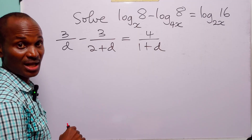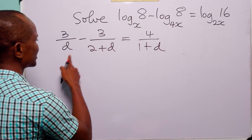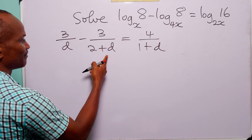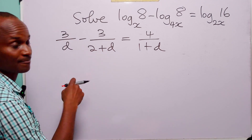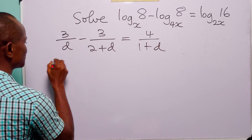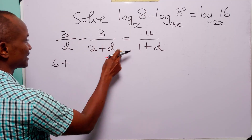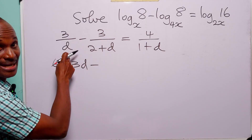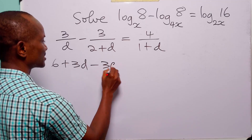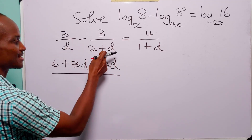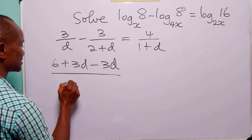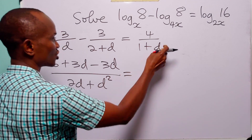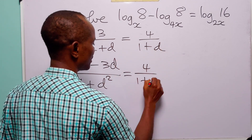To solve this rational equation, we first combine the two fractions on the left into one. Multiplying across, the numerator becomes 3(2 + d) minus 3d, which gives 6 + 3d minus 3d. The denominator is d(2 + d) = 2d + d². On the right-hand side we have 4 over (1 + d).